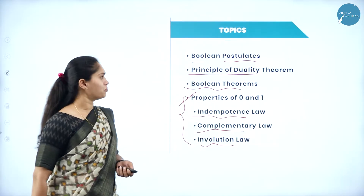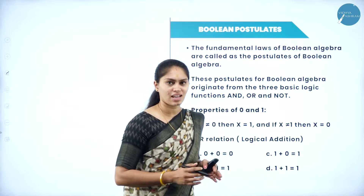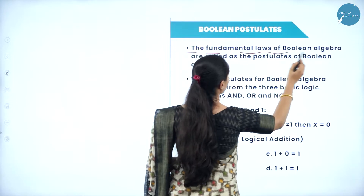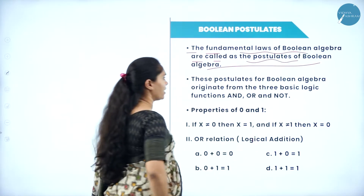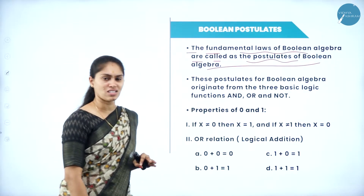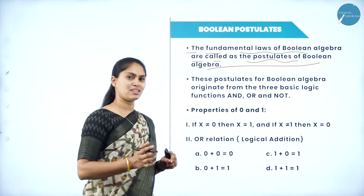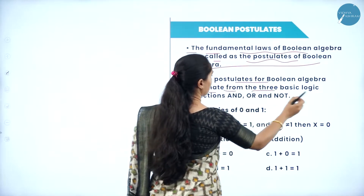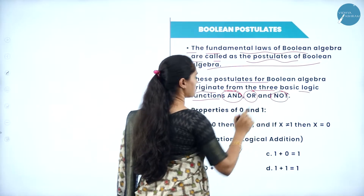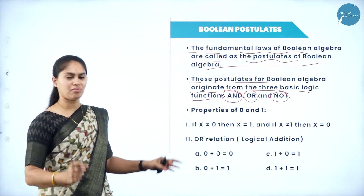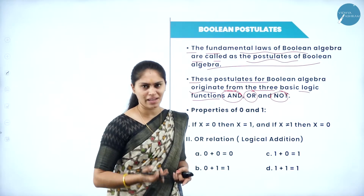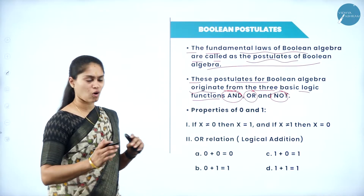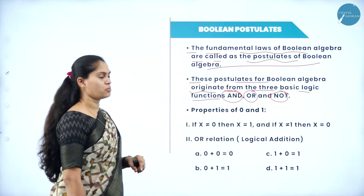Let me now discuss Boolean postulates. The fundamental laws of Boolean algebra are called the postulates of Boolean algebra. These are the rules and regulations we have to follow in Boolean algebra. These postulates originate from the three basic logic functions: AND, OR, and NOT. Everything in Boolean algebra is based on AND, OR, and NOT — that is Boolean multiplication, Boolean addition, and Boolean complementation. With these operations only we are going to work in Boolean algebra.